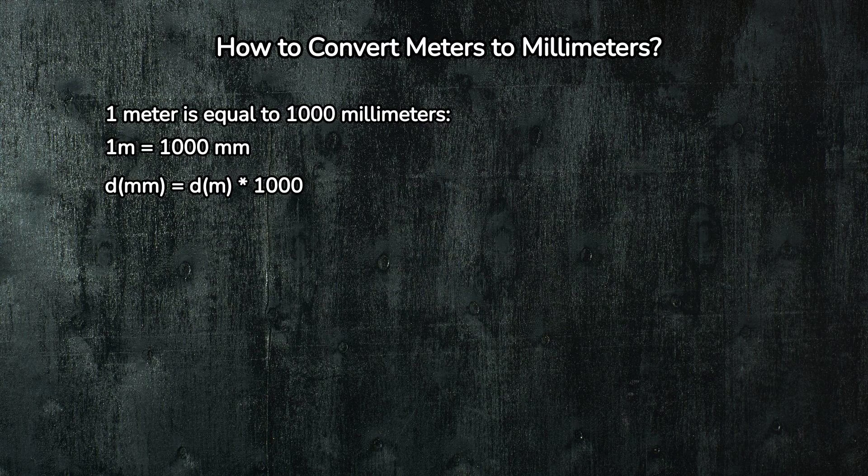Why? Because milli- means 1,000th. So there are 1,000 millimeters in one meter. The measurement length in millimeters can be obtained by multiplying the length in meters by a factor of 1,000.